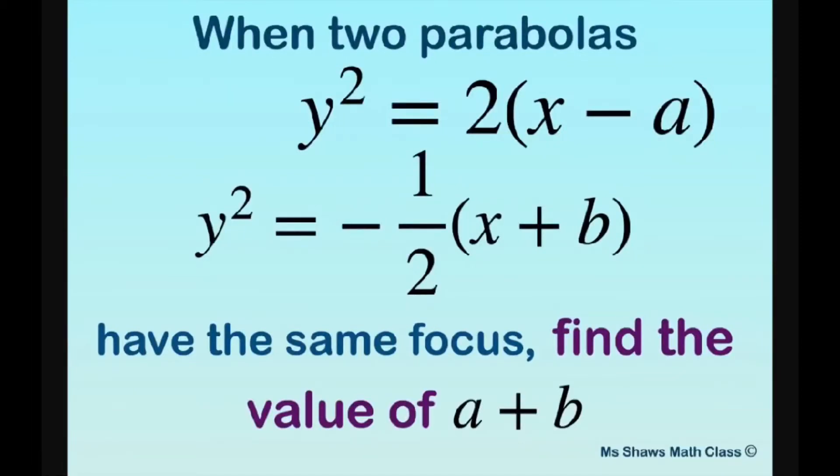Hi everyone. When two parabolas y squared equals two times x minus a and y squared equals negative one-half times x plus b have the same focus, we're going to find the value of a plus b.